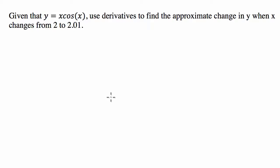Hi guys, we've got an Applications of Differentiation question here today where the question says we've got given that y equals x cosine of x, use derivatives to find the approximate change in y when x changes from 2 to 2.01.